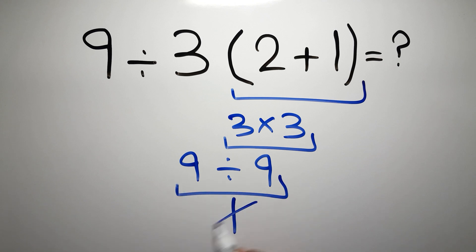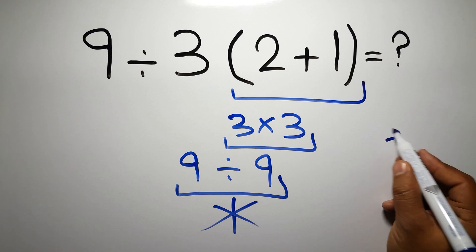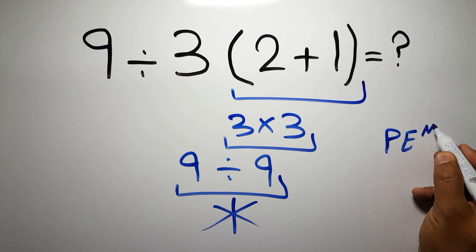But this answer is not correct, because according to the order of operations, first we have to do parentheses, then exponents, then multiplication or division, and finally addition or subtraction.